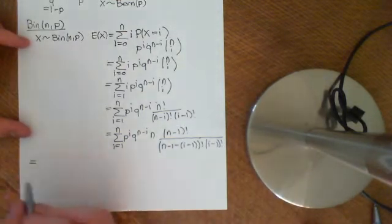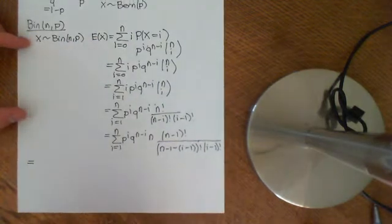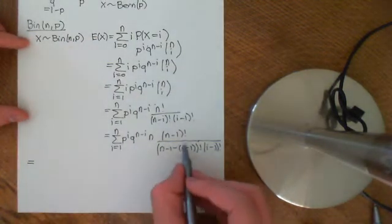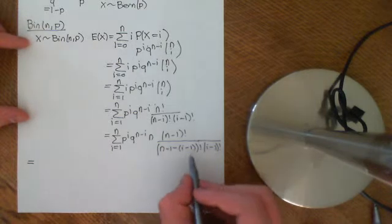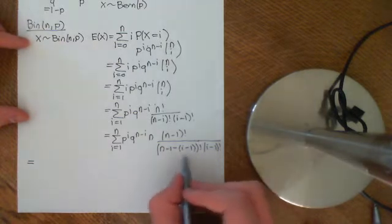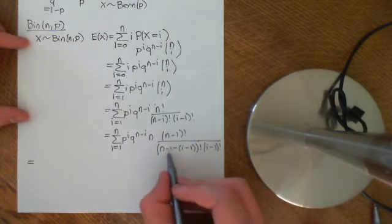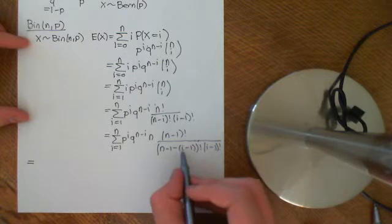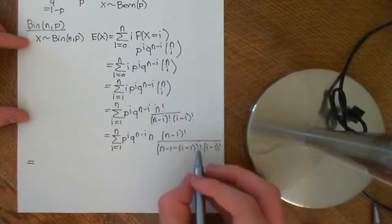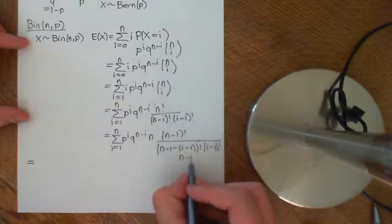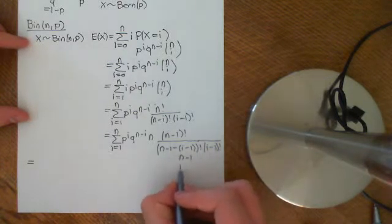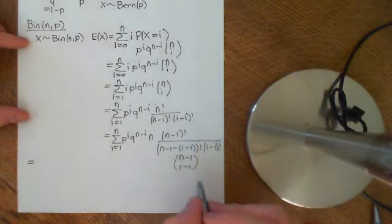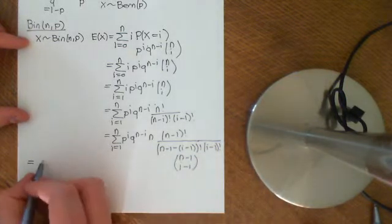All I've done is subtracted 1 and then added 1 over here. The reason that's a clever thing to do is because this can be rewritten as n minus 1 choose i minus 1, which is looking hopeful.